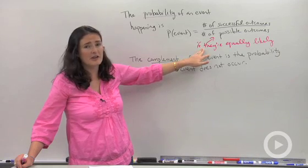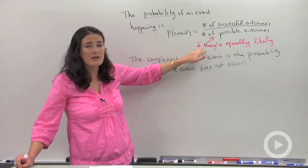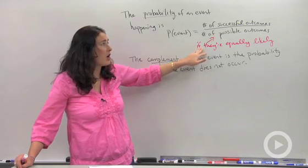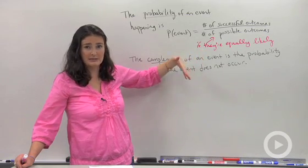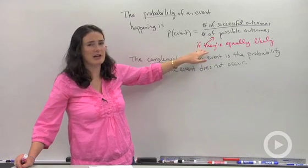Another important thing I have here in red is that this formula is only true if your outcomes are all equally likely. If some of them are not equal as others or equally likely to happen as others, it's going to be a lot trickier.